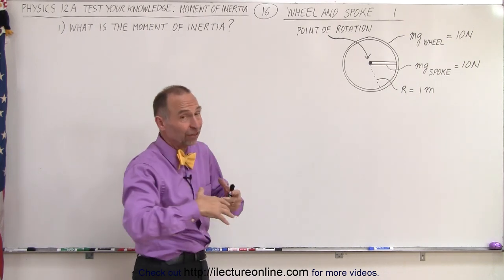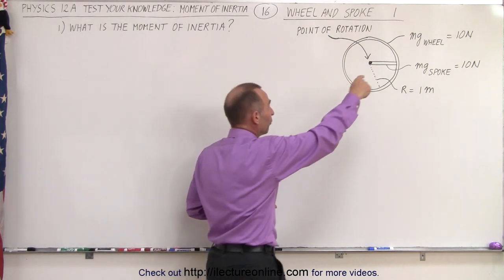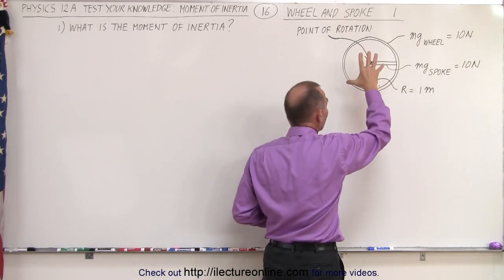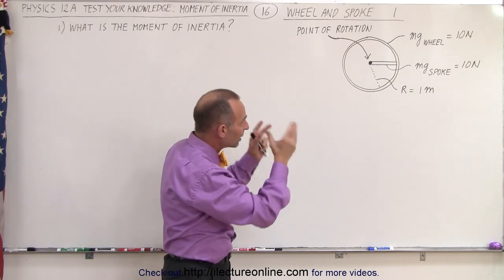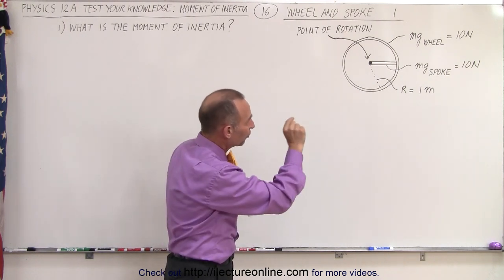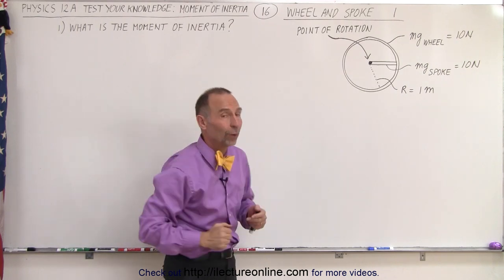But here, this is not a steering wheel of a car, this is a free rotating ring. Notice that the weight of the wheel is 10 newtons, the weight of the spoke is 10 newtons, and the radius is 1 meter.